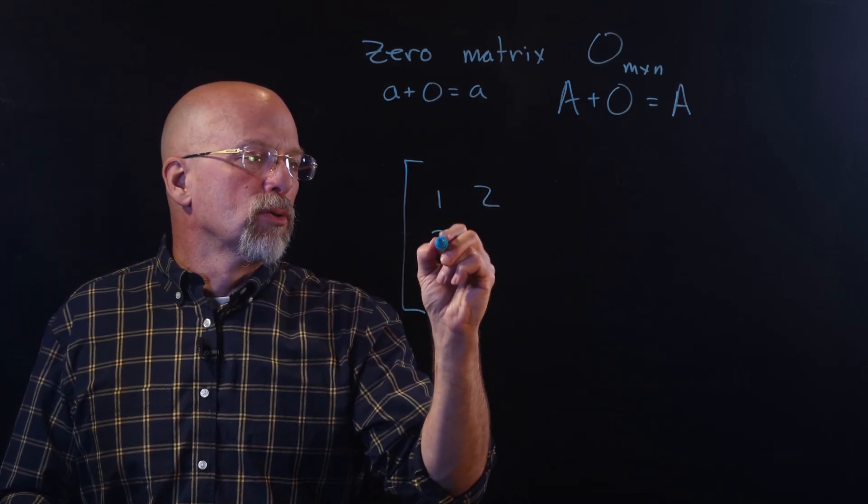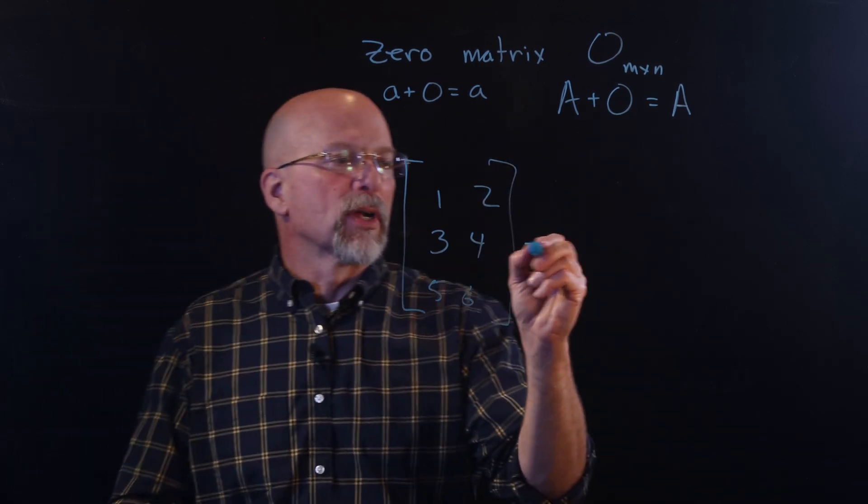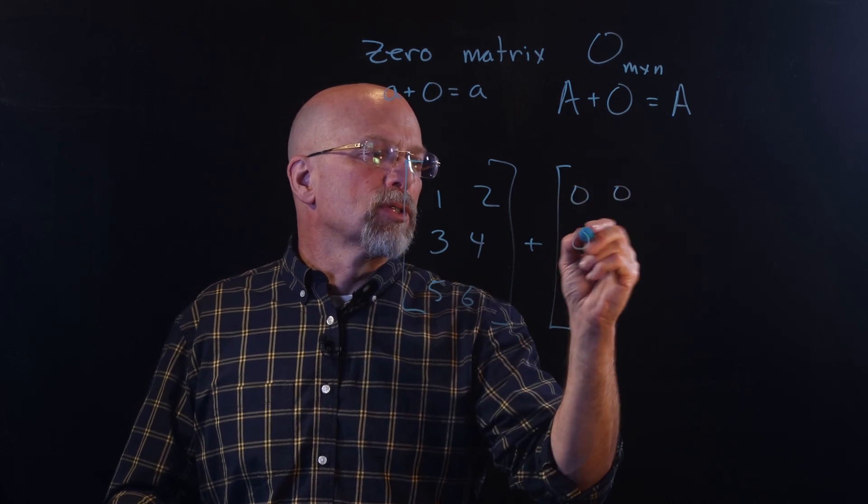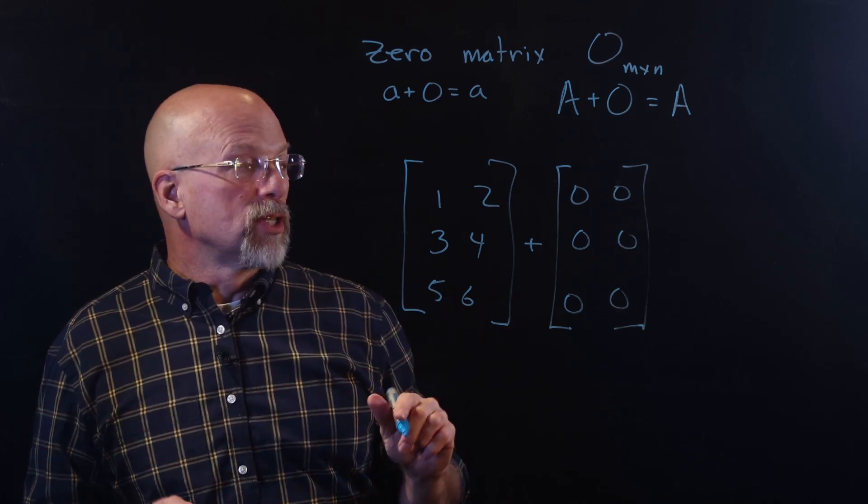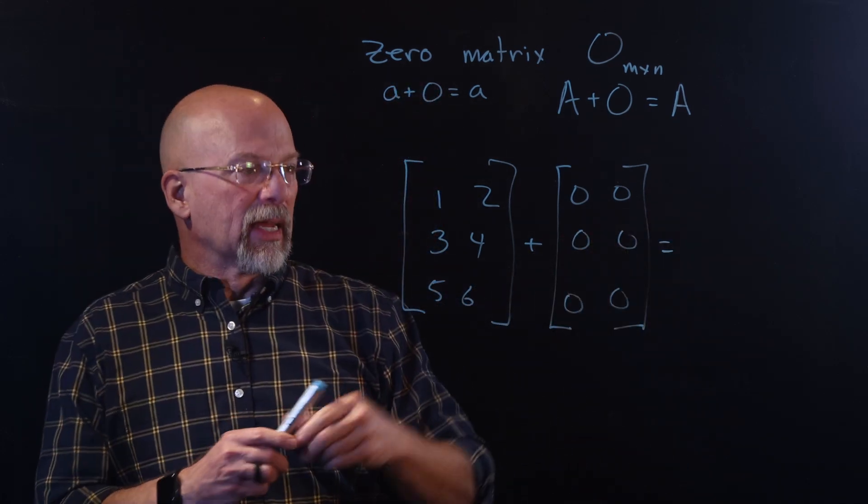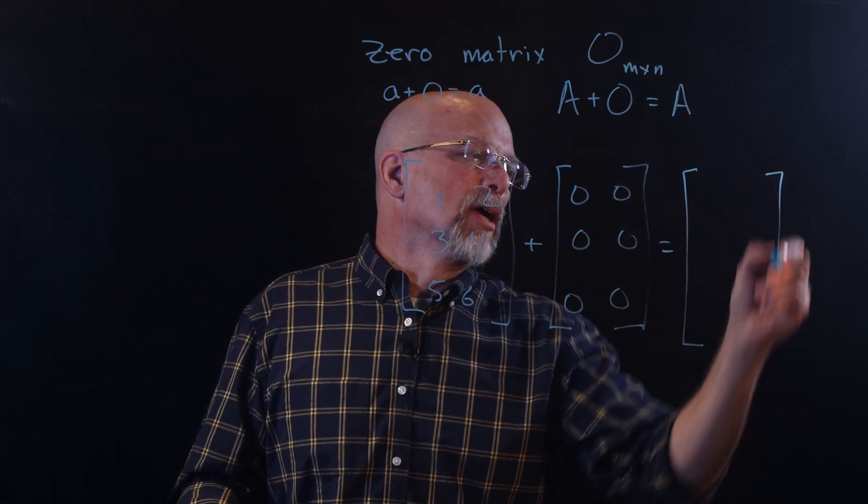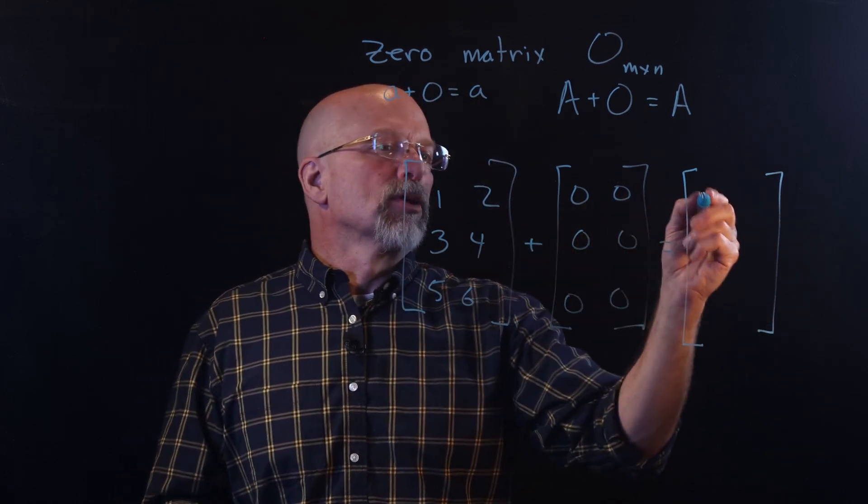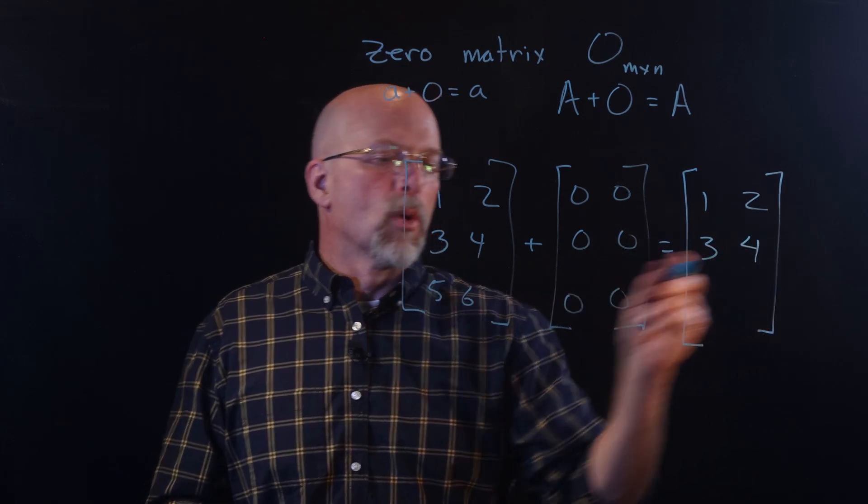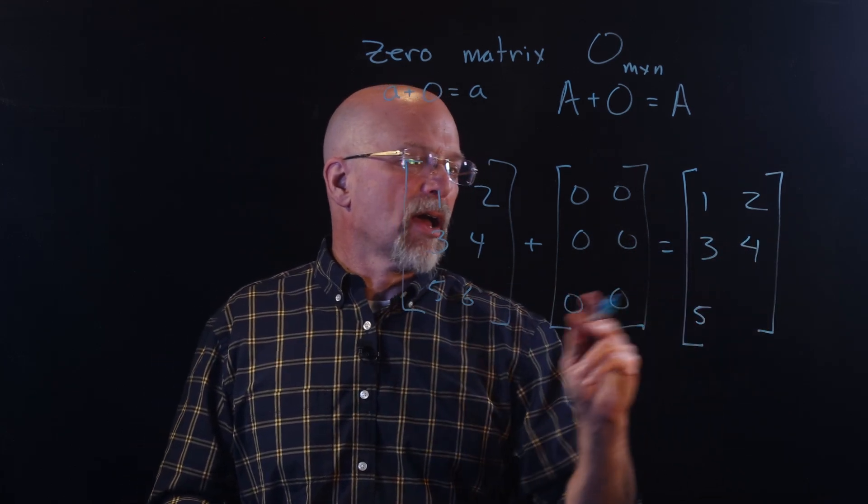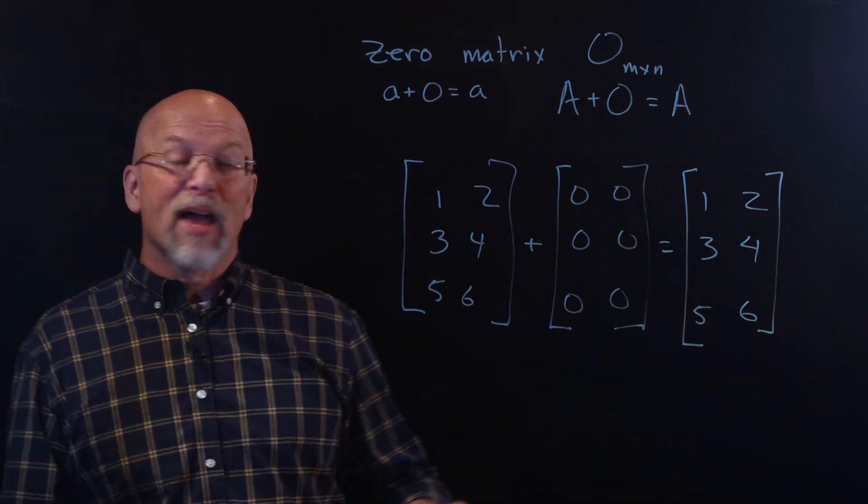For example, if I have 1, 2, 3, 4, 5, 6 in a three-row, two-column matrix, and I add it to 0, 0, 0, 0, 0, 0—a three-row, two-column matrix of zeros—then I get exactly the same thing as the original matrix A. So I've got 1 plus 0 is 1, 2 plus 0 is 2, 3 plus 0 is 3, 4 plus 0 is 4, 5 plus 0 is 5, and 6 plus 0 is 6. Same matrix.